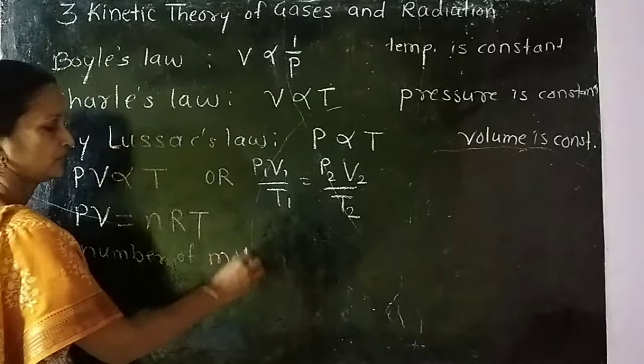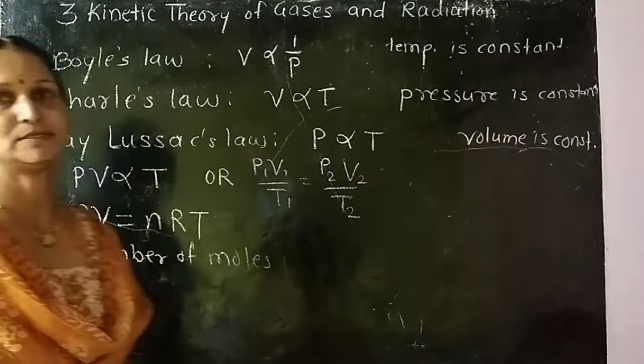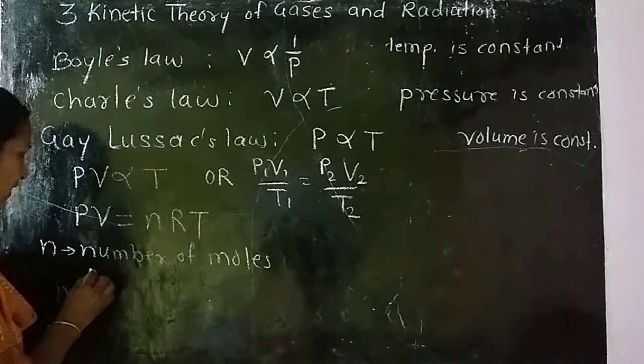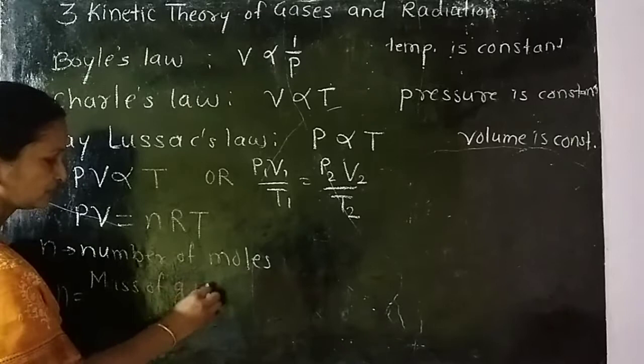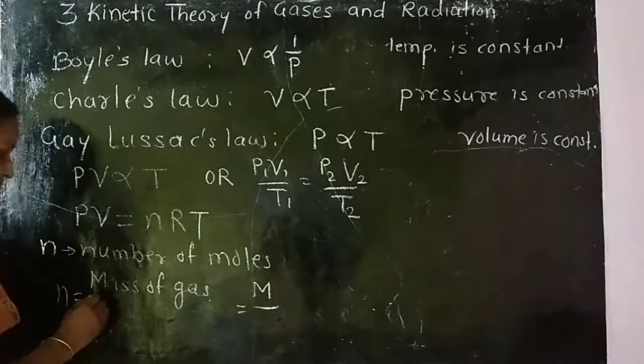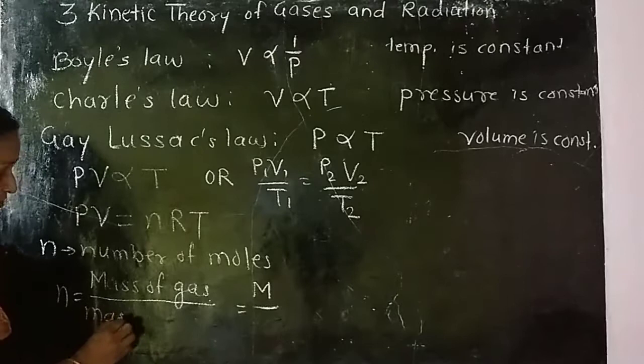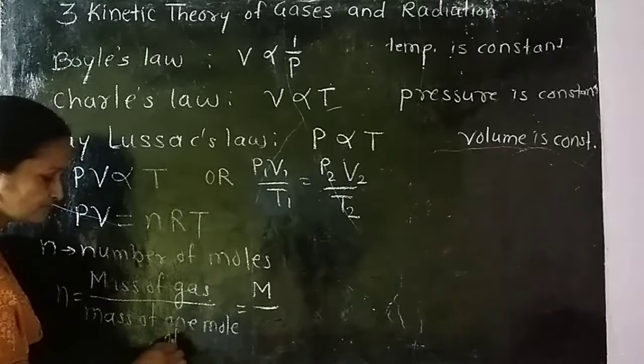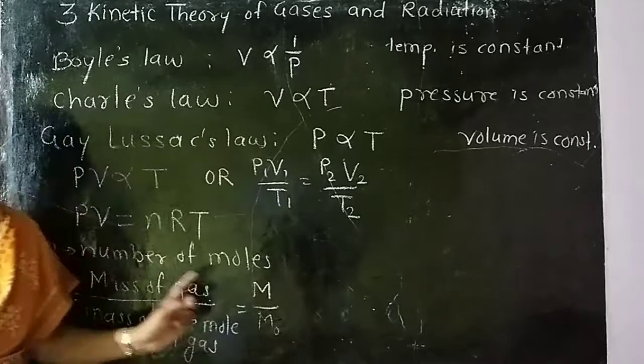This N can be defined as mass of gas divided by molar mass of gas. Mass of gas is denoted by letter M, and it is divided by molar mass of gas, that means mass of 1 mole of gas, denoted by M0. So number of moles is mass of gas divided by molar mass of gas.